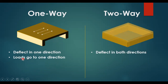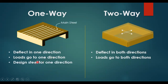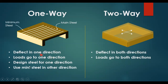For one-way solid slabs, loads go to one direction only. However, for two-way solid slabs, loads go to both directions as you can see here. In one-way solid slabs we design for main steel reinforcement in one direction only, and in the other direction we use minimum steel reinforcement without design — we just have to satisfy the code requirement for minimum steel reinforcement.